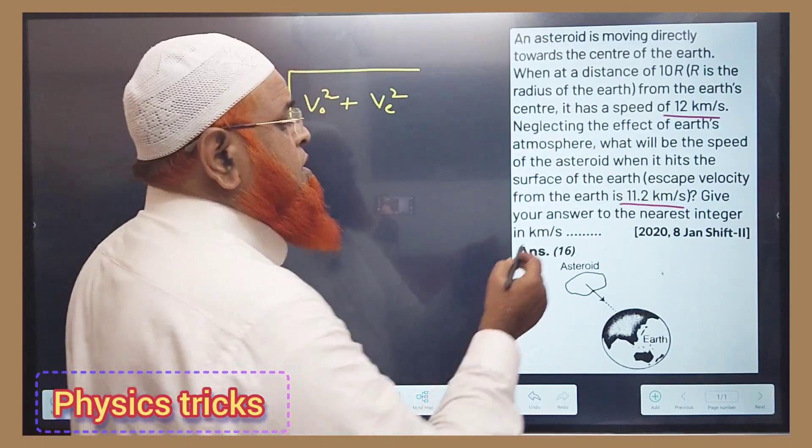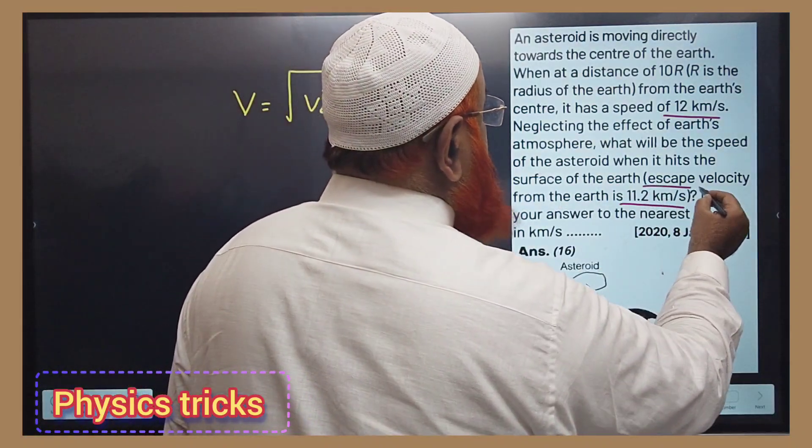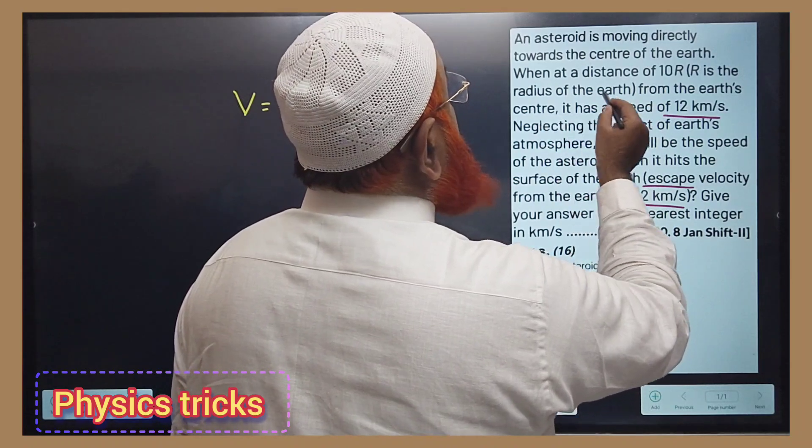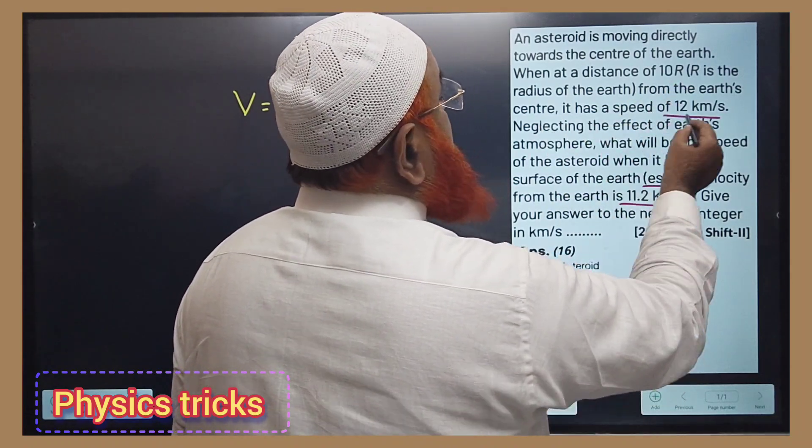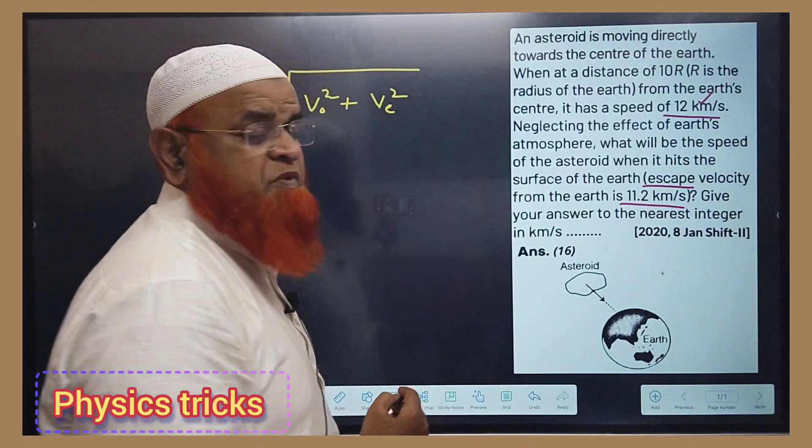You can just see here now. He has given you an escape velocity and the orbital velocity also, which is 12 kilometers per second.